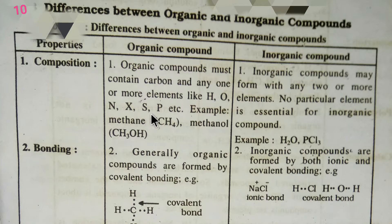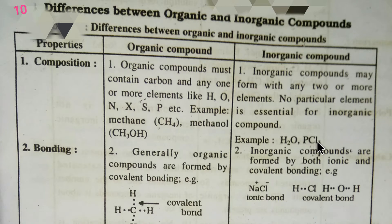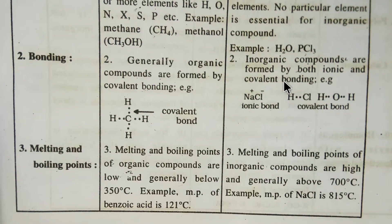Other elements in organic compounds include halogens, sulfur, phosphorus, etc. Examples include methane and methanol. In the case of inorganic compounds, they may form with any two or more elements — no particular element is essential. Examples include water, potassium chloride, and phosphorus trichloride.